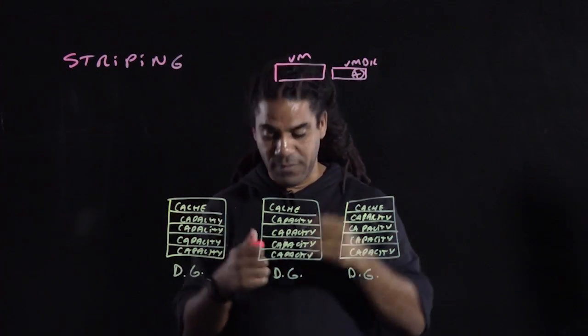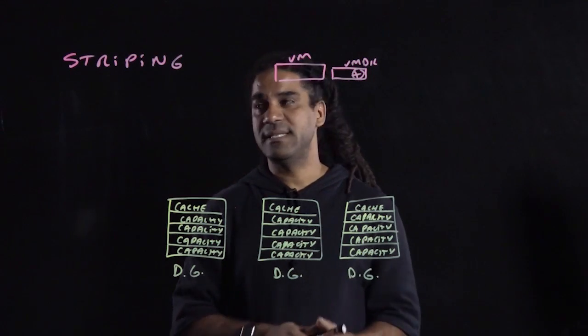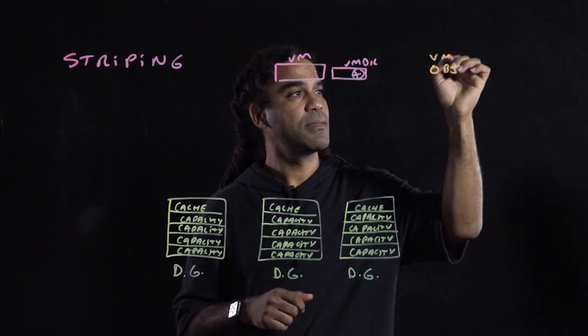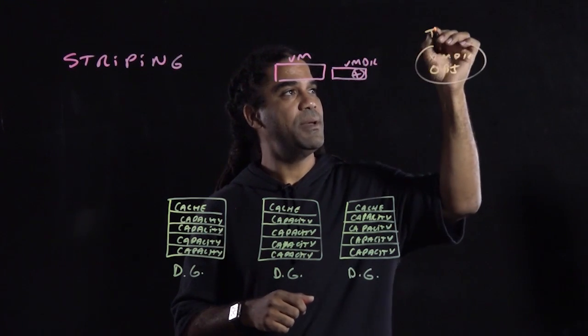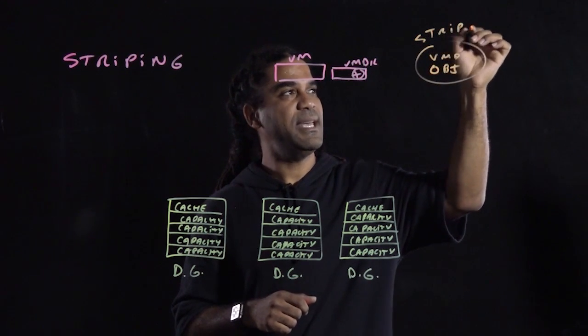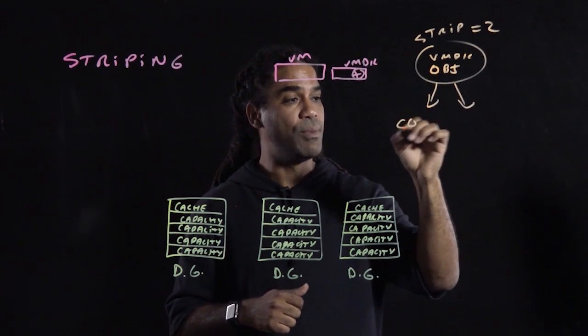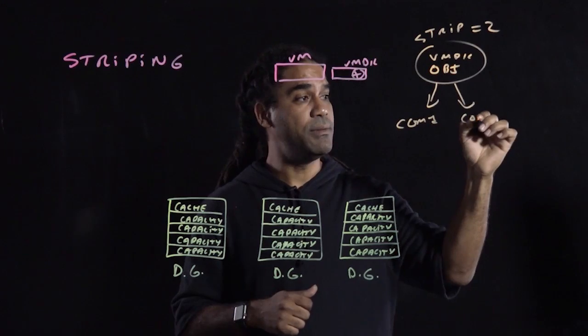So in the SPVM policy for that VMDK, you can proceed and say, I want that object VMDK to have a stripe, let's say 2, right? So that object is going to be broken into two different components, component 1 and component 2.